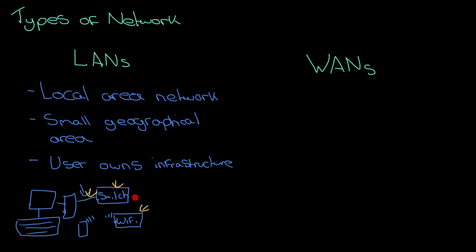These are all examples of infrastructure, and for a LAN, somebody within the building owns it. At home, your parents might own the Wi-Fi router. At a school, it might be the network administrators who own all the hardware. It's owned by somebody in the area where the network is located, and that's a key difference that everyone forgets.